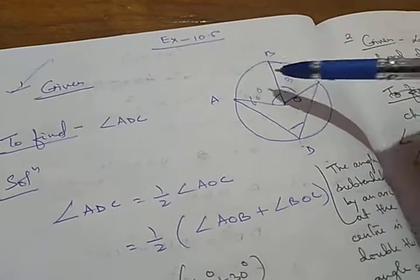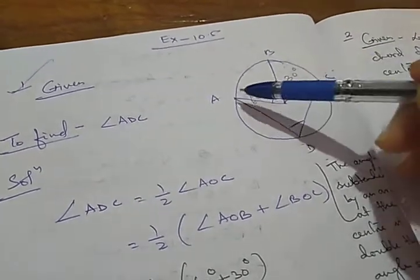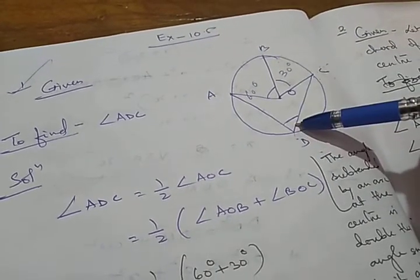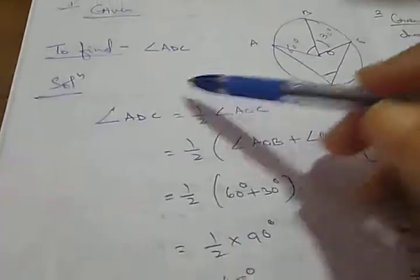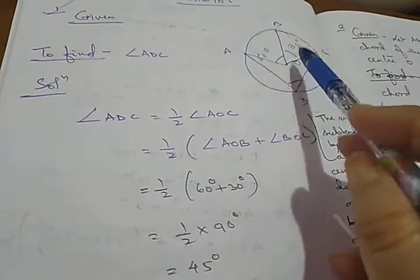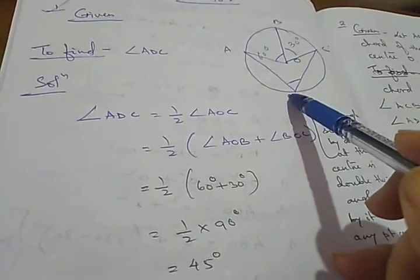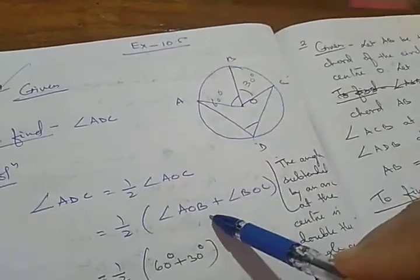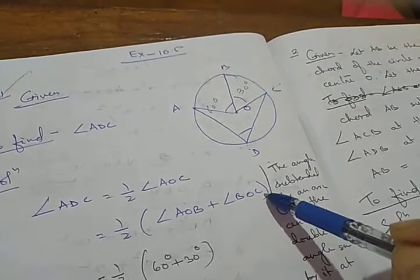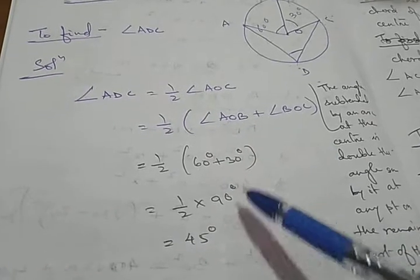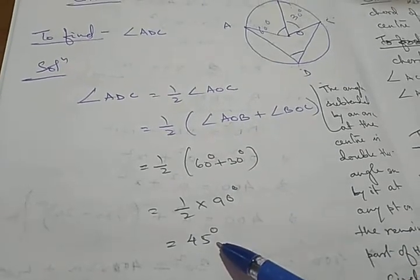As you know, the AC arc subtends angle AOC at the center, and angle ADC at the remaining part of the circle. So angle AOC is double the angle ADC, meaning angle ADC equals half of angle AOC. Now, angle AOC is not directly given, but we can find it as angle AOB plus angle BOC — that is 60 degrees plus 30 degrees equals 90 degrees. So half of 90 degrees is 45 degrees. Don't forget to write the theorem you are using.